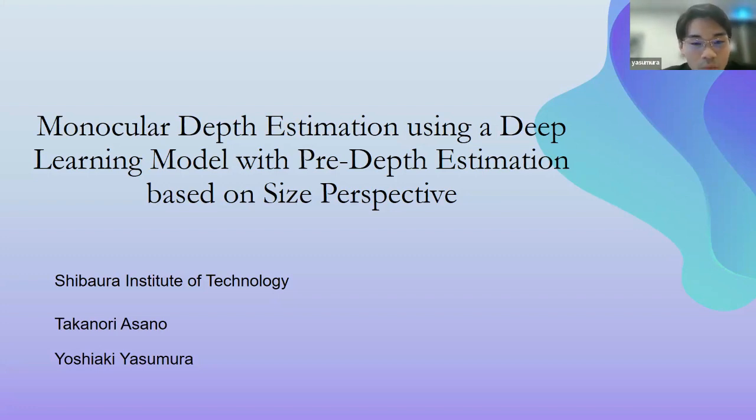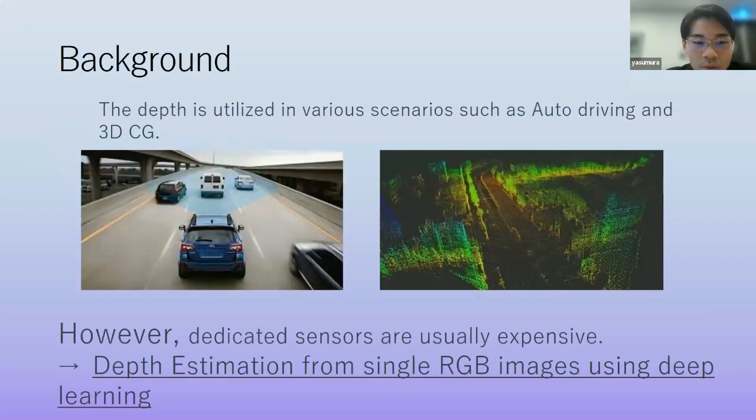So today we talk about depth estimation. We will start from the background of depth estimation. Depth information represents 3D scenes, so the depth is utilized in various scenarios such as autonomous driving and 3D CG or SLAM. However, the depth is often measured by delicate sensors like LiDAR sensors, and those kind of delicate sensors are usually more expensive than typical monocular RGB cameras.